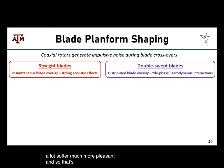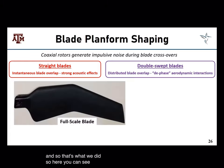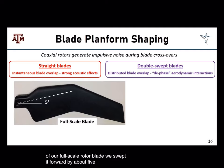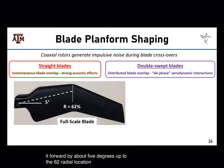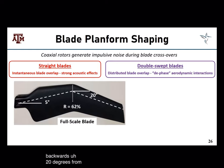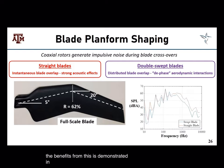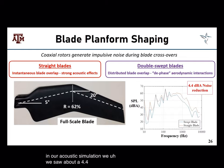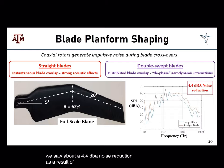Here you can see in this photograph of our full-scale rotor blade — we swept it forward by about five degrees up to the 62% radial location, and then swept it backwards 20 degrees from that point onwards. The benefits are demonstrated in our acoustic simulation: we saw about a 4.4 dBA noise reduction as a result of introducing this double swept design.